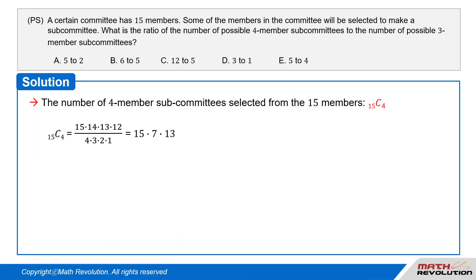The number of four-member subcommittees selected from the 15 members is 15 choose 4, which is equal to 15 times 14 times 13 times 12 over 4 times 3 times 2 times 1, which is equal to 15 times 7 times 13.